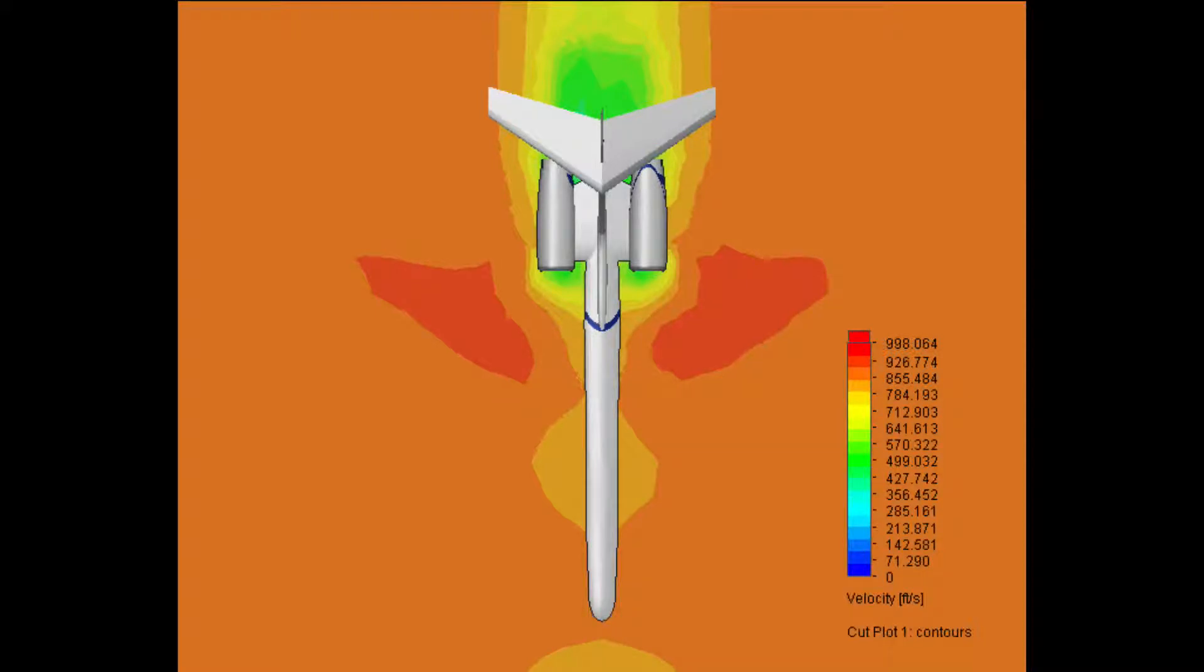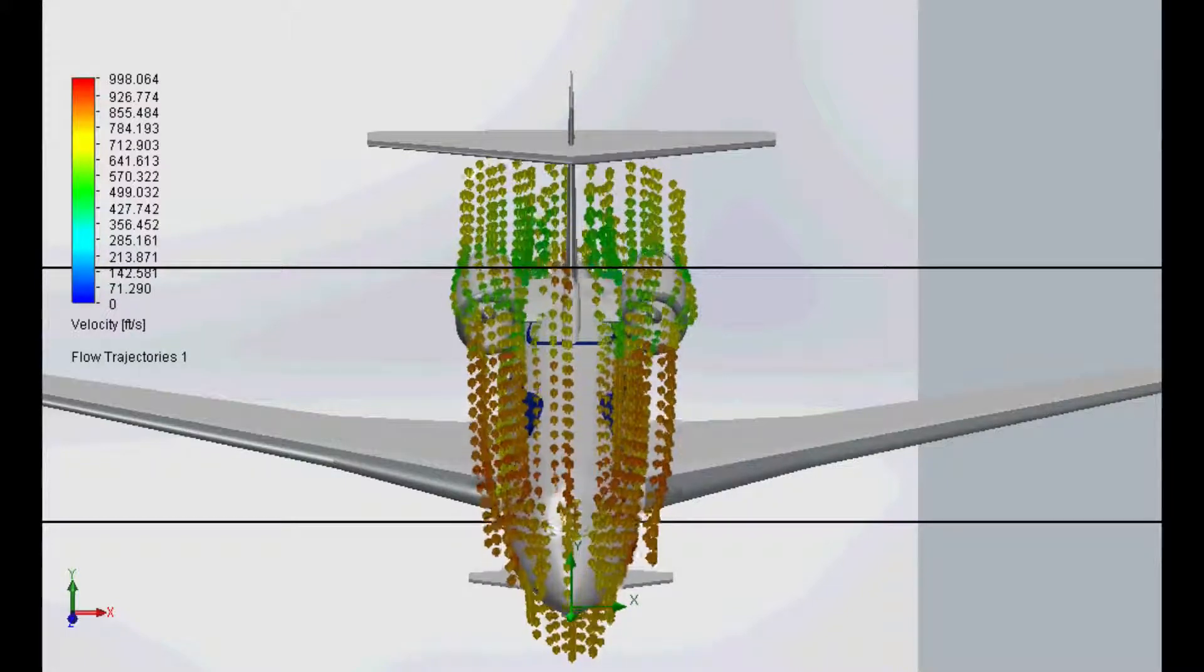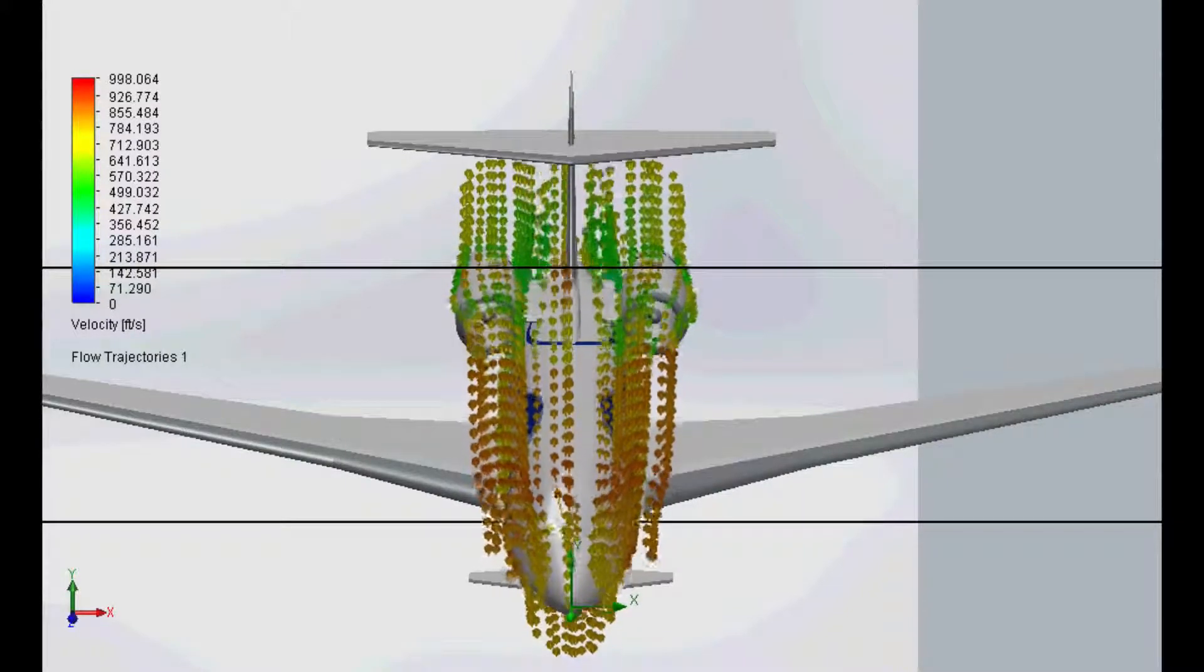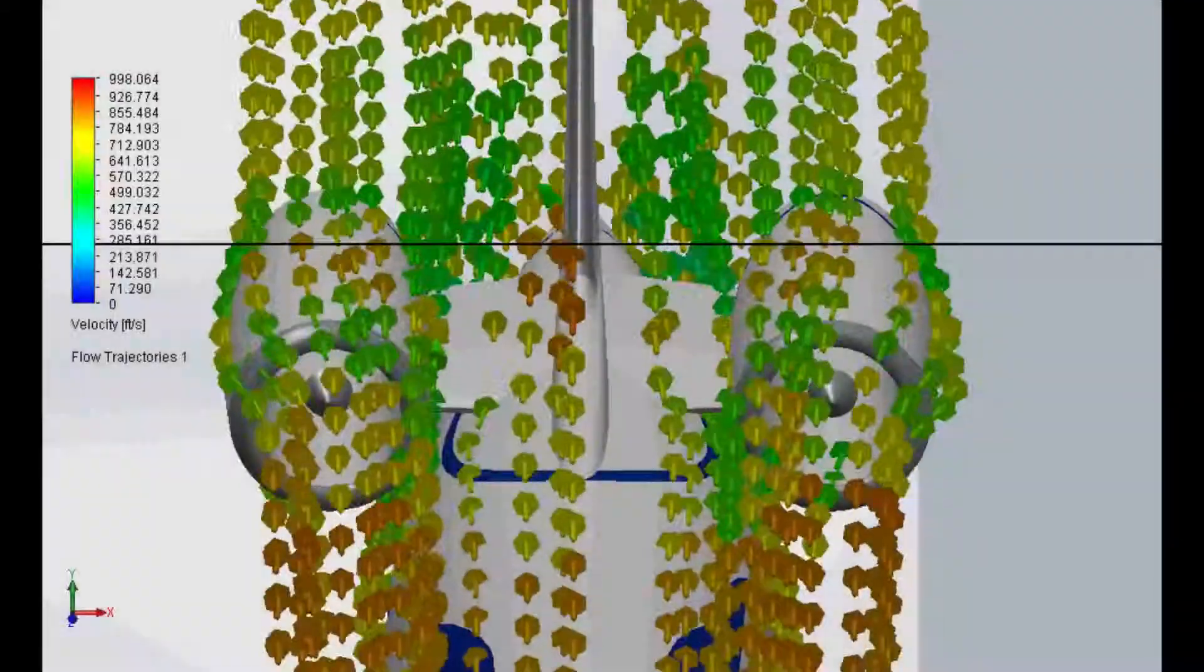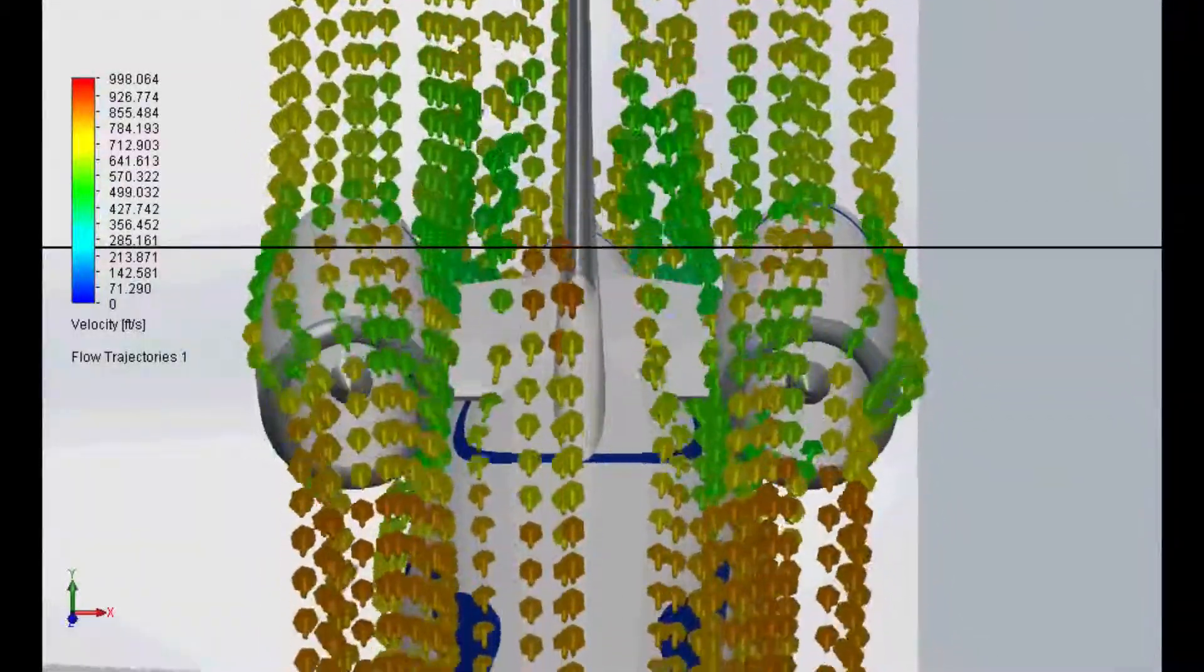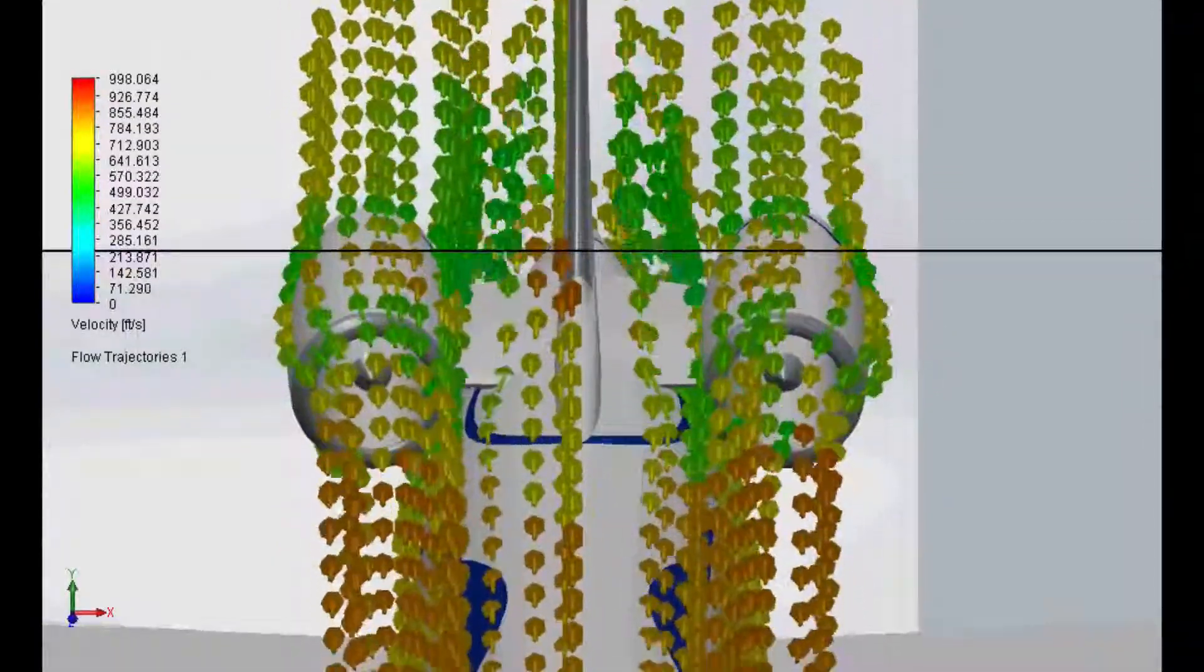And this video is also going to show the difference between intakes and engines closer to the fuselage as well as farther apart. This is the airstreams or streamlines of the freestream air. As you can see, it runs along the fuselage and slows down because of the pillars for the intakes and engines, as well as showing the effects of nacelle drag.